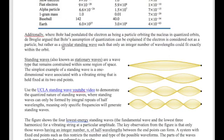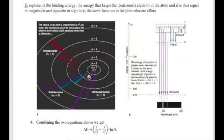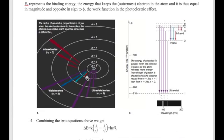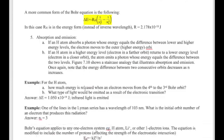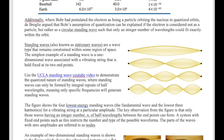De Broglie also proposed that if the electron is a wave, then the original Bohr model — which assumes the electron is a particle circling the nucleus — is not quite right. It makes more sense to model the electron as a wave, since we now know the electron displays wave-like properties. The type of wave the electron should be modeled as is called a standing wave. A standing wave, also called a stationary wave, is generated when you have two fixed ends and you move the wave up and down.